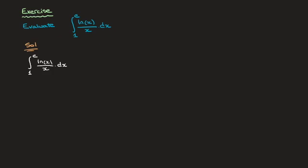Now first of all, I like to state that this equals to capital F of e minus capital F of 1, where capital F of x is the antiderivative, so the integral of ln of x over x. And so the first thing I do is actually find this antiderivative.